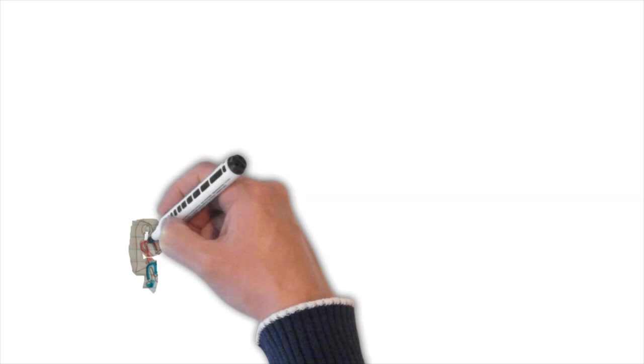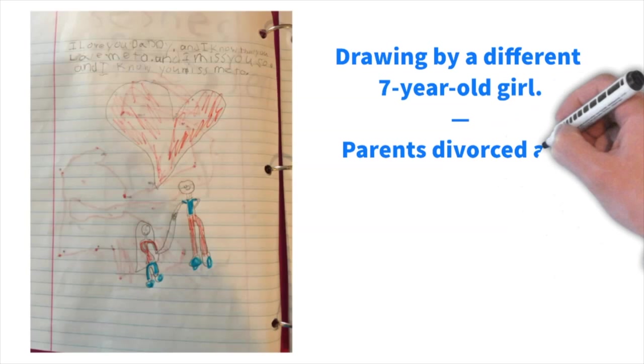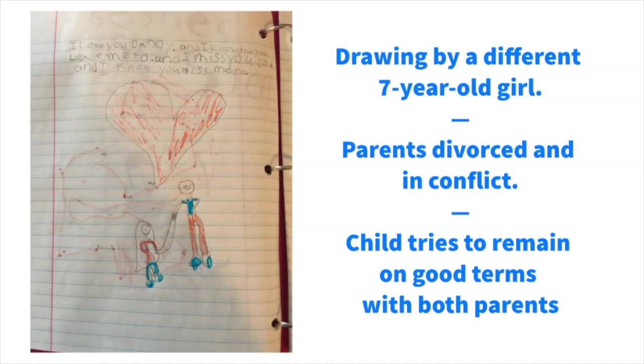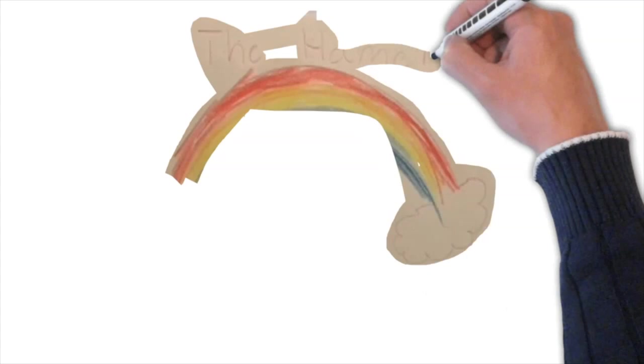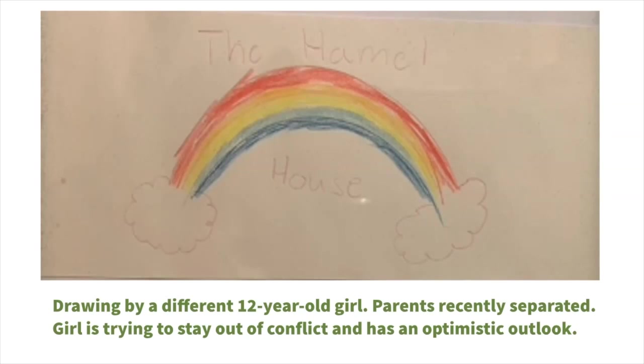A drawing by a different seven-year-old girl. The parents are divorced and in conflict, and the child tries to remain on good terms with both parents. She writes, I love you, Daddy, and I know that you love me too. I miss you so, and I know you miss me too. A drawing by a different 12-year-old girl. The parents recently separated. The girl is trying to stay out of conflict and has an optimistic outlook.